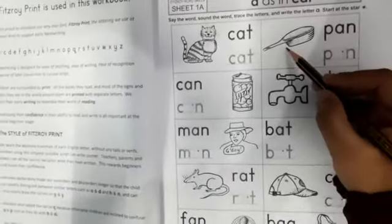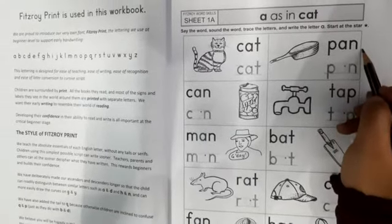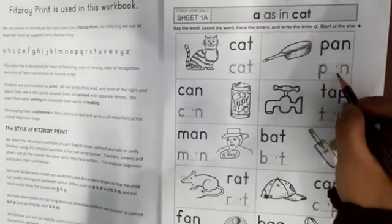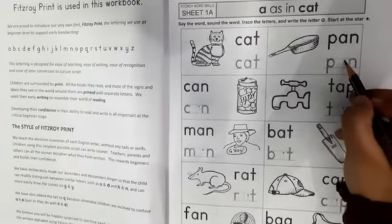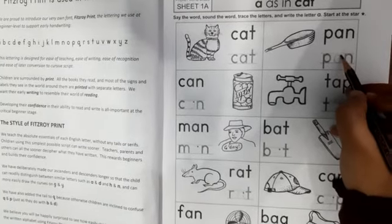This is a pan. P, A, N, pan. Here you have to write A. So write A. Now do tracing.